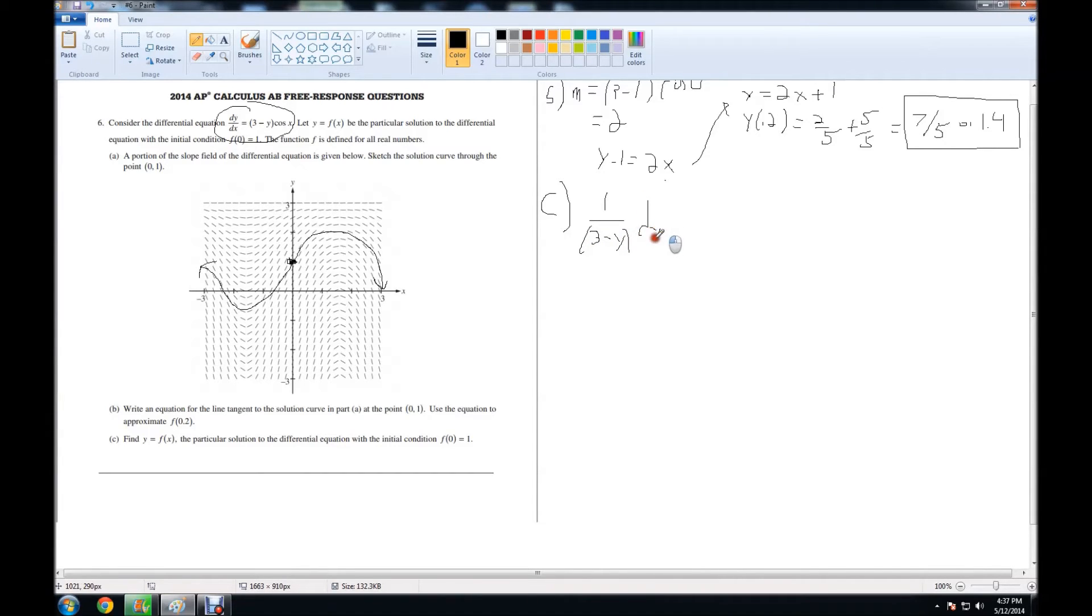we have 1 over (3-y) dy. I rewrote it as 1 over (3-y) and brought the dy to the side, so I can easily see that this is a natural log. When we integrate, it equals cosine(x) dx.